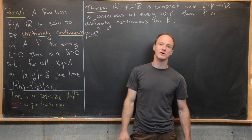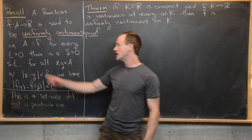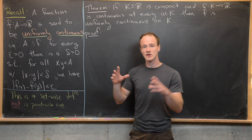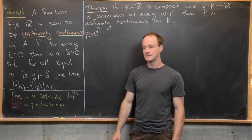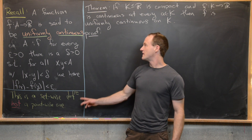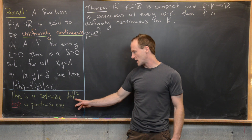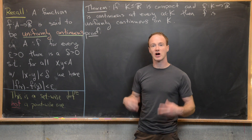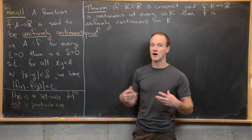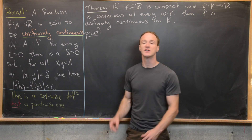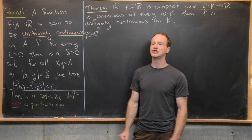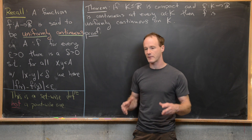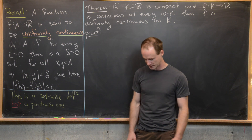The important thing to notice here is that if we are given some epsilon, then the delta works for the entire set. That makes this notion of uniform continuity a set-wise definition. You talk about uniform continuity on a set, versus regular continuity, which is generally thought of as a point-wise definition — you talk about continuity at a point.